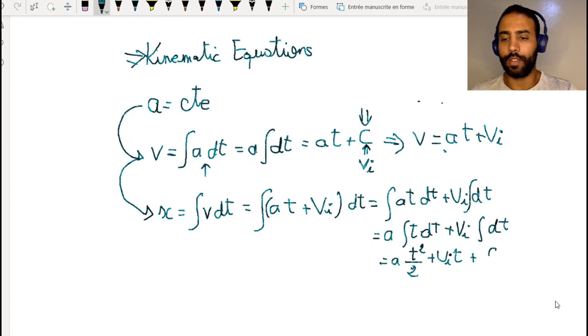The constant this time is the initial position x_0. So the final kinematic equation will be x = (1/2)at² + v_i t + x_0, where x_0 is the initial position.